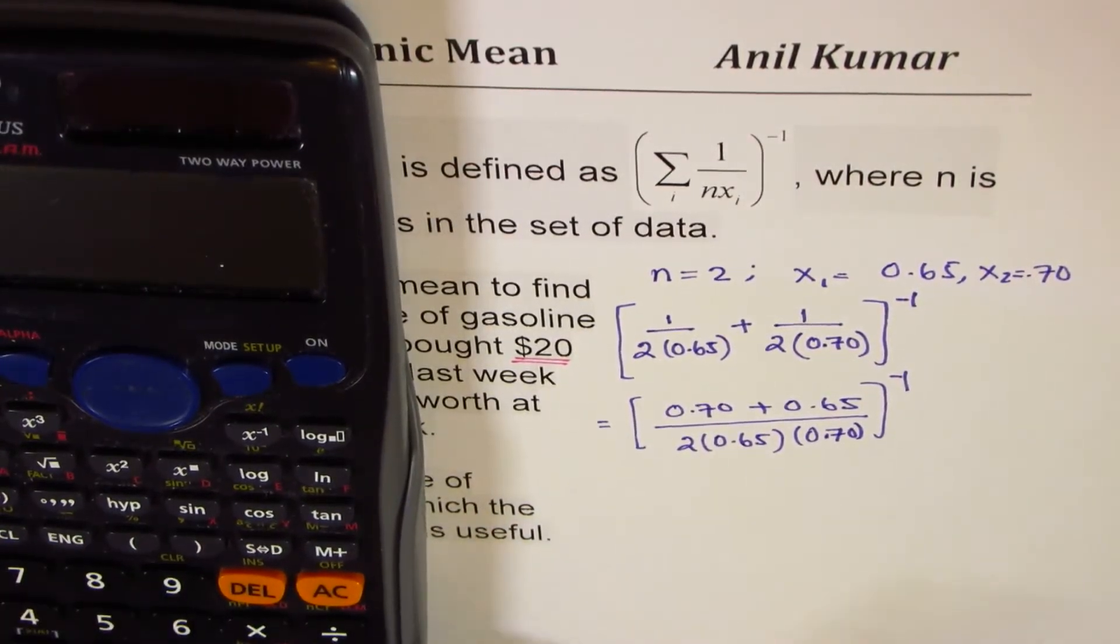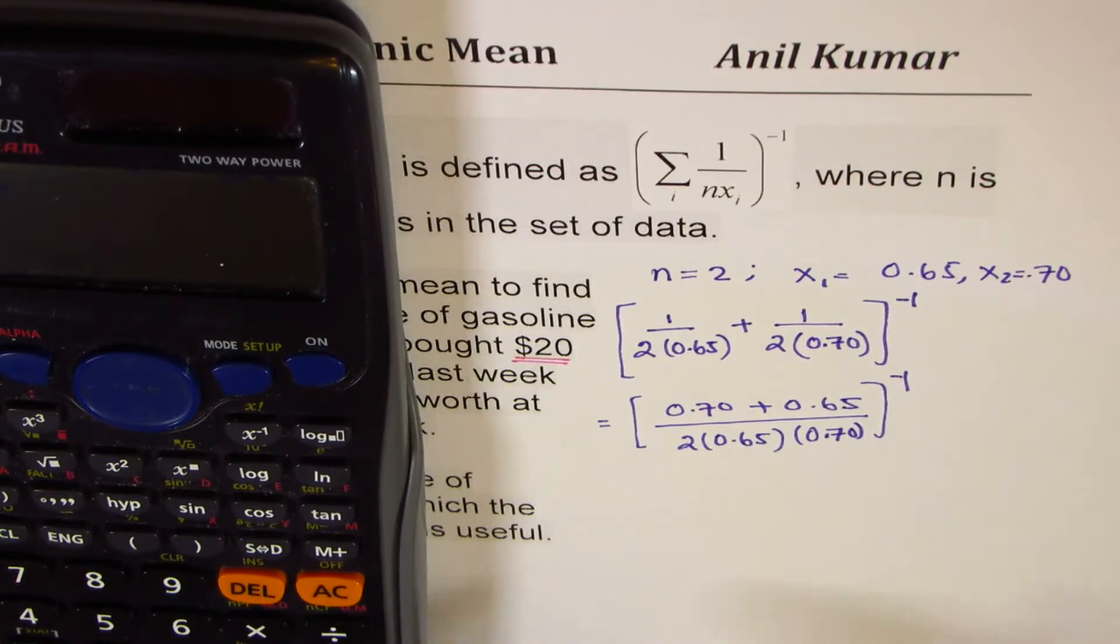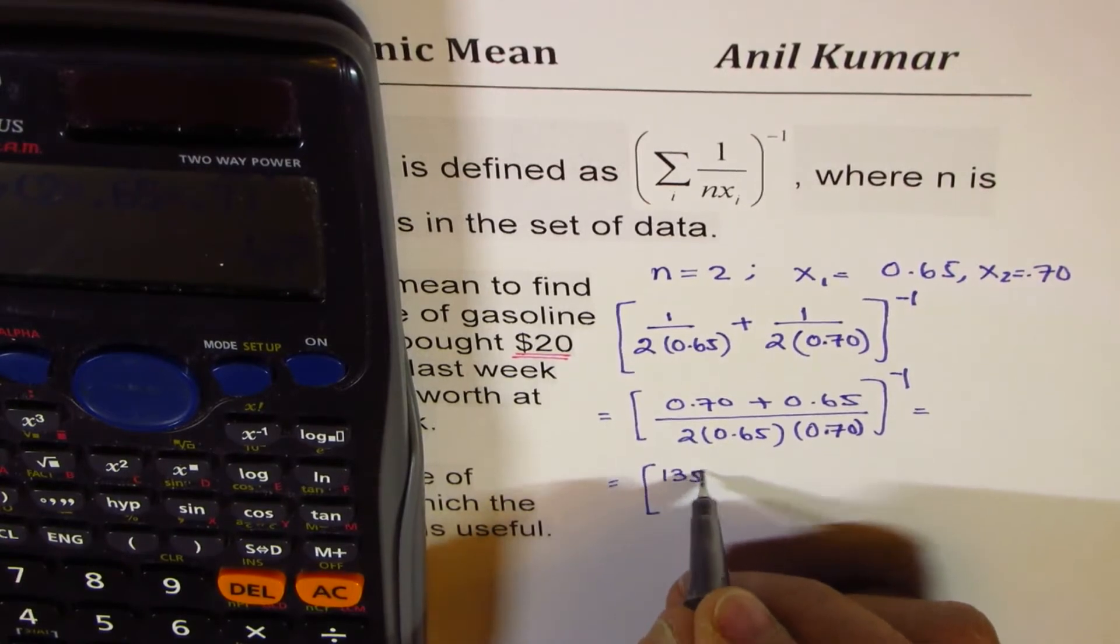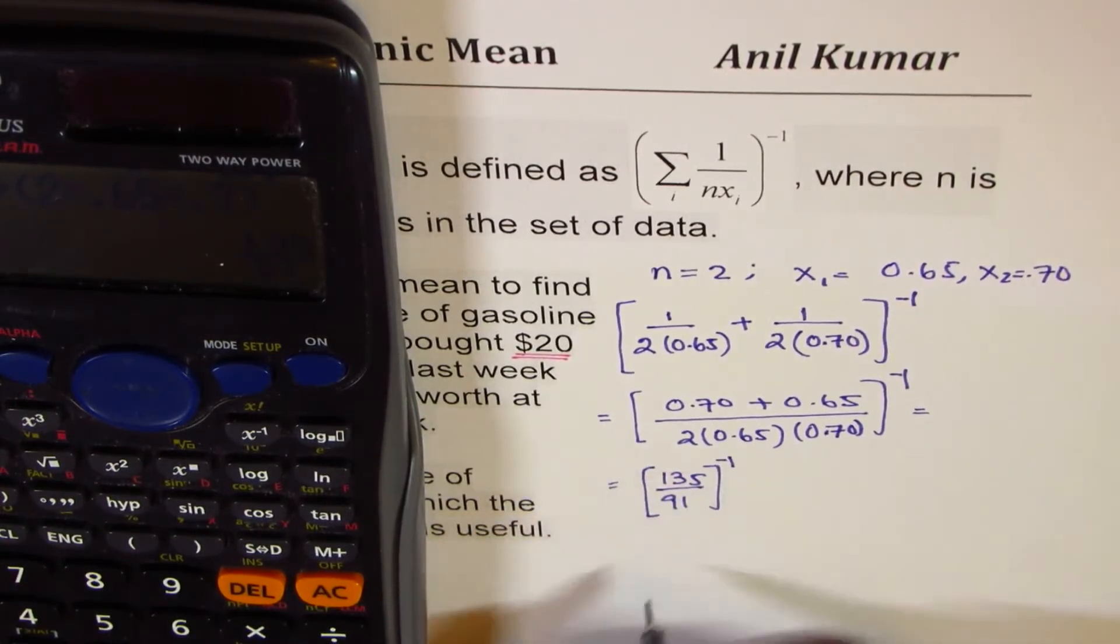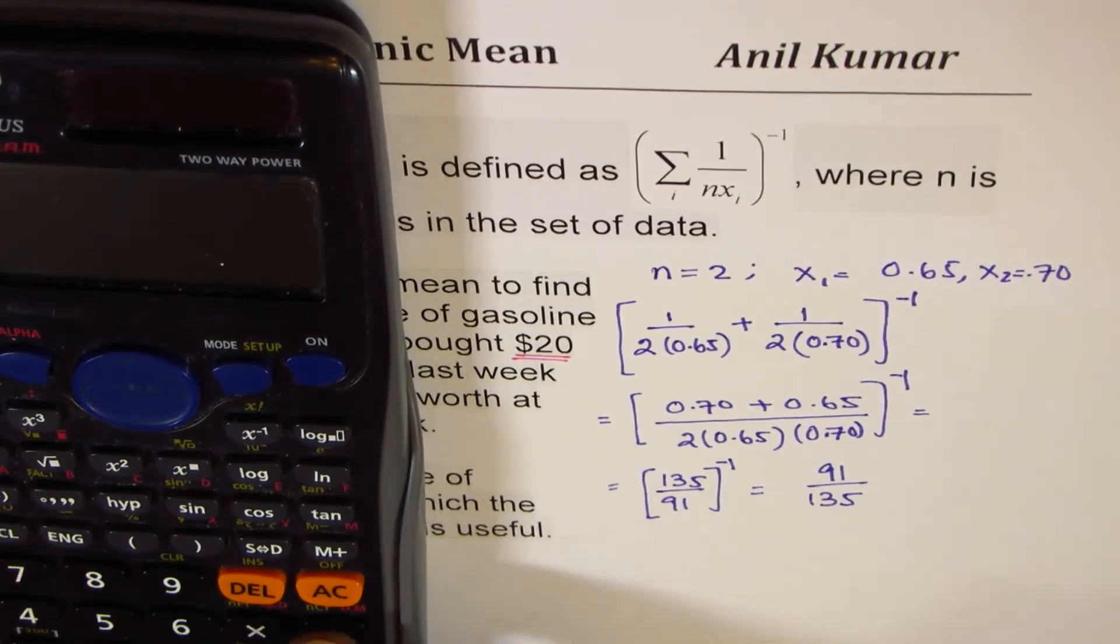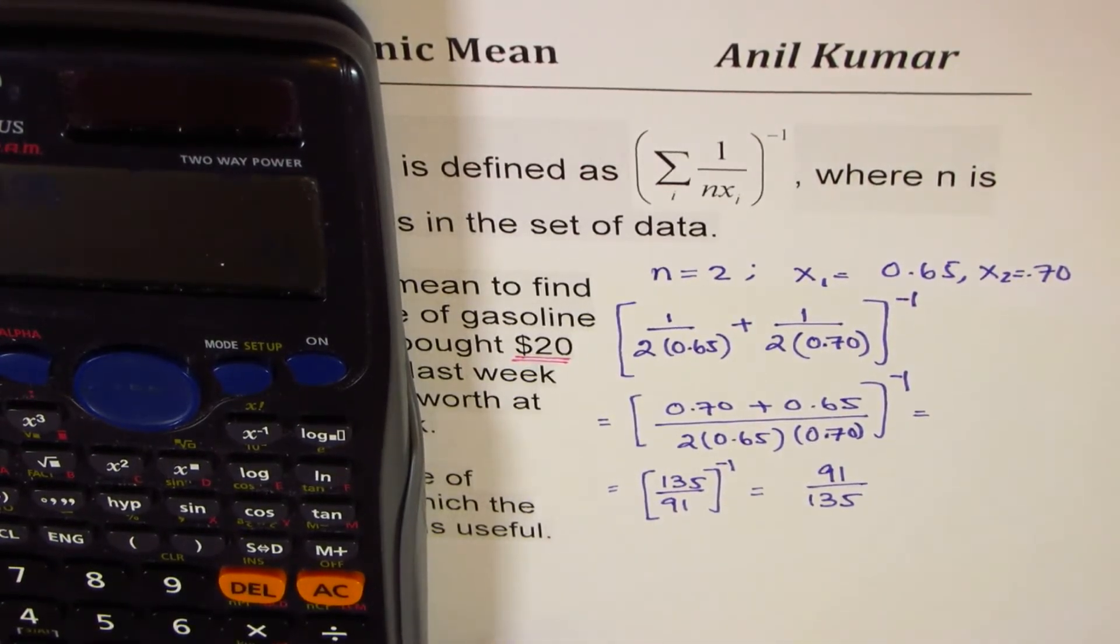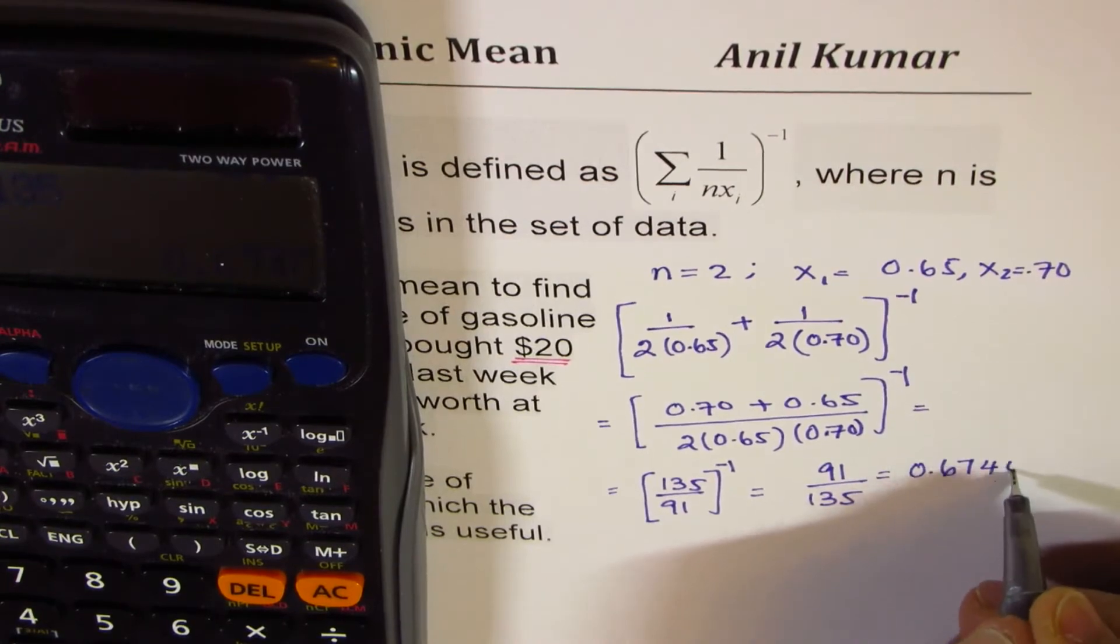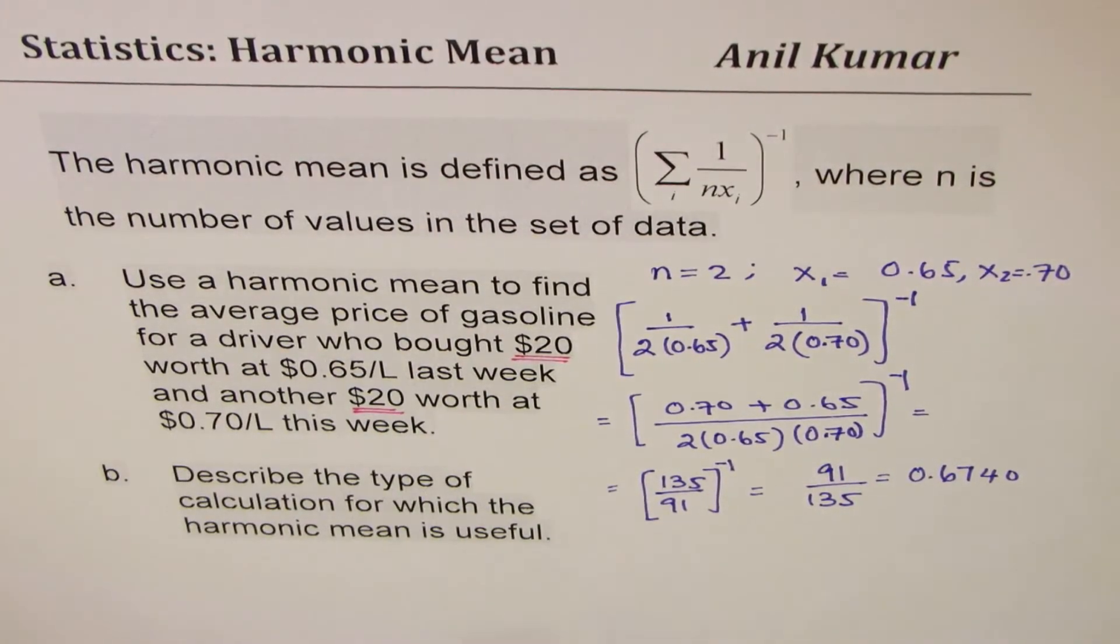So, let's calculate this. So, we have 0.7 plus 0.65, which is equal to this number. And we'll divide this number by product of all that, which is, within brackets, 2 times 0.65 times 0.7, and that is equal to 135 over 91 to the power of minus 1. Now, so that is 91 over 135. Let me do 91 divided by 135 in decimals, that gives us around 0.6740. Now, that is what our harmonic mean is.